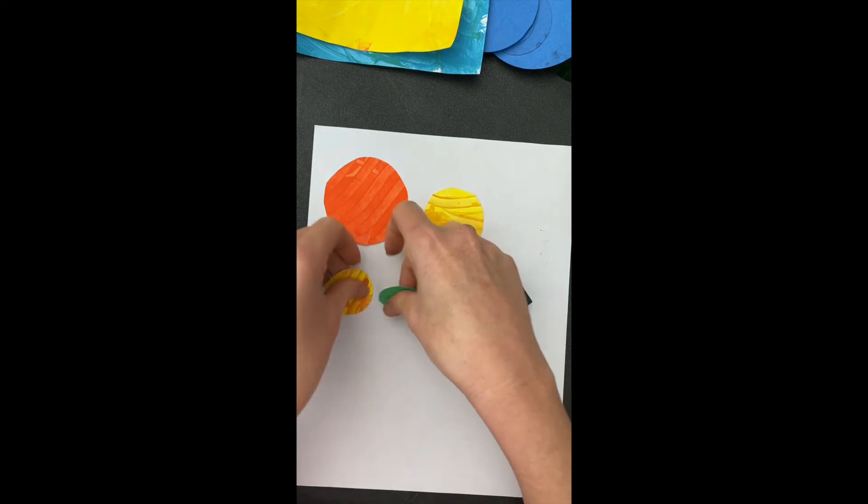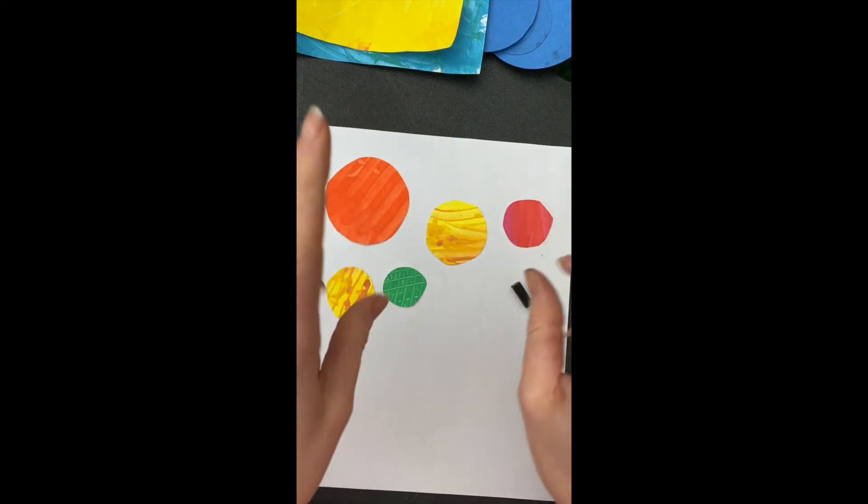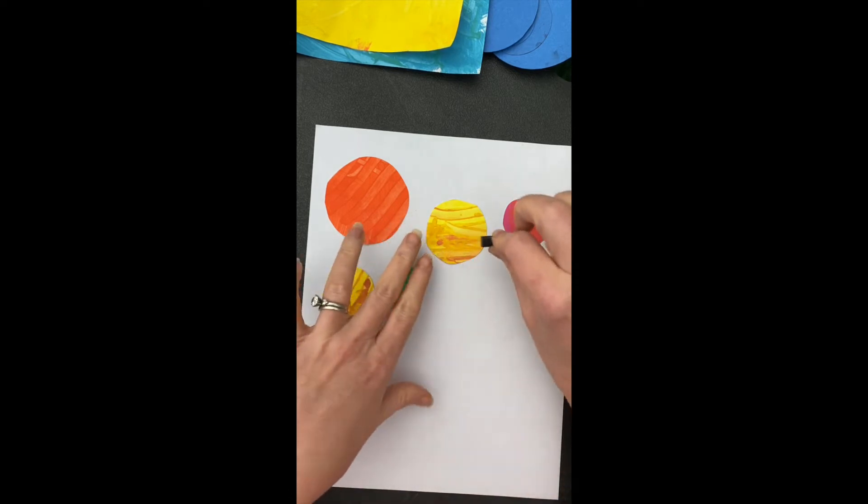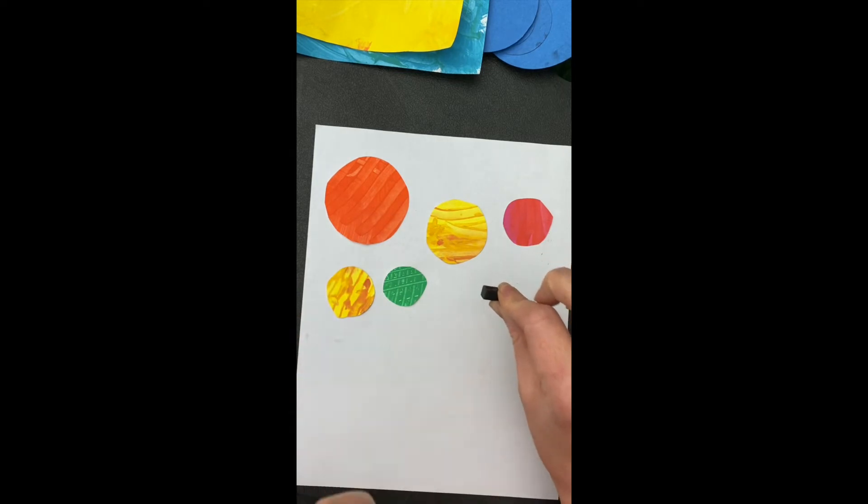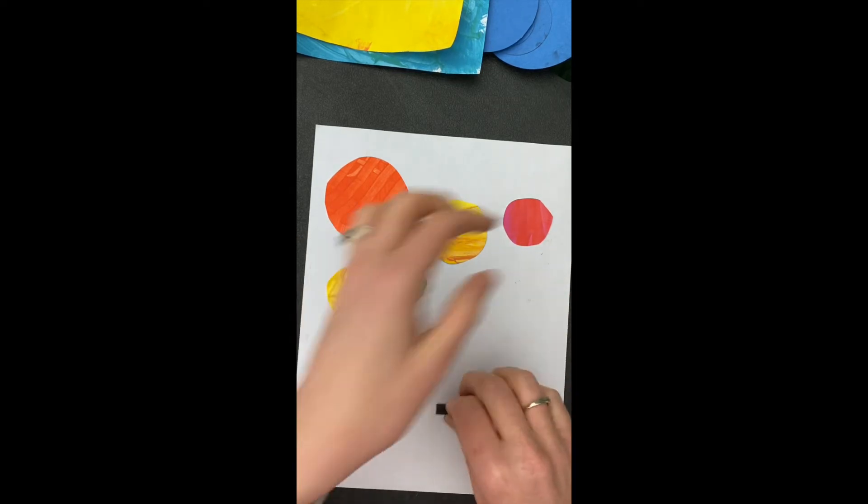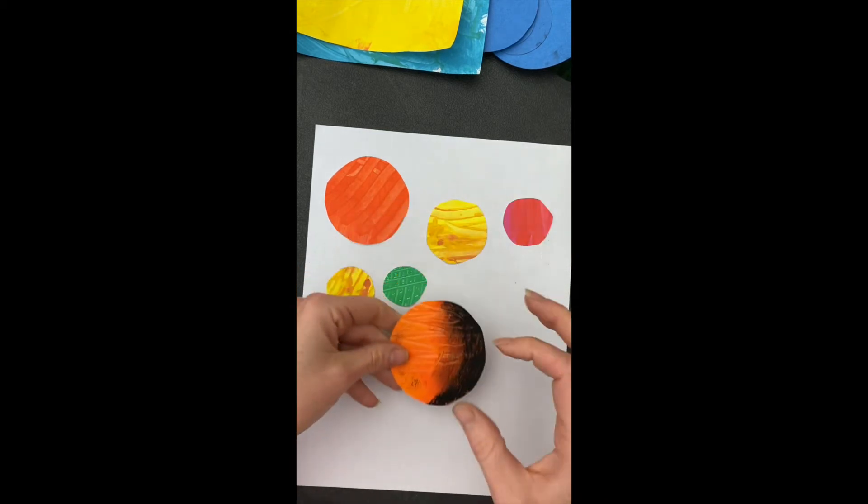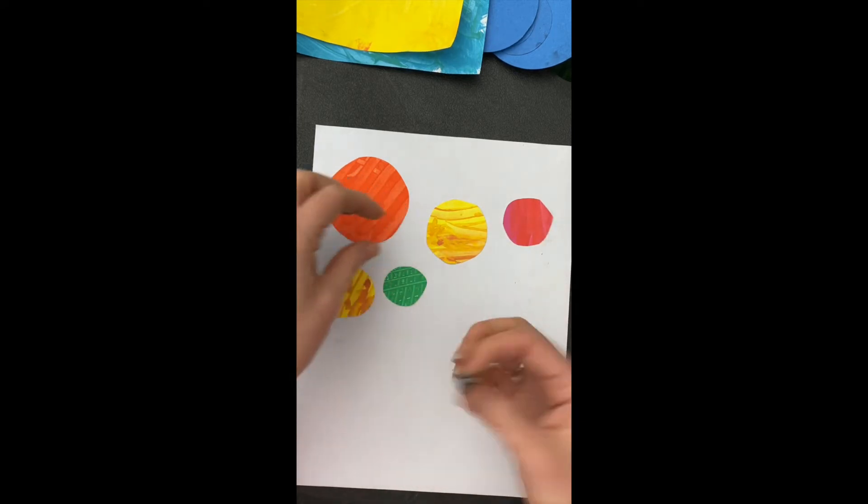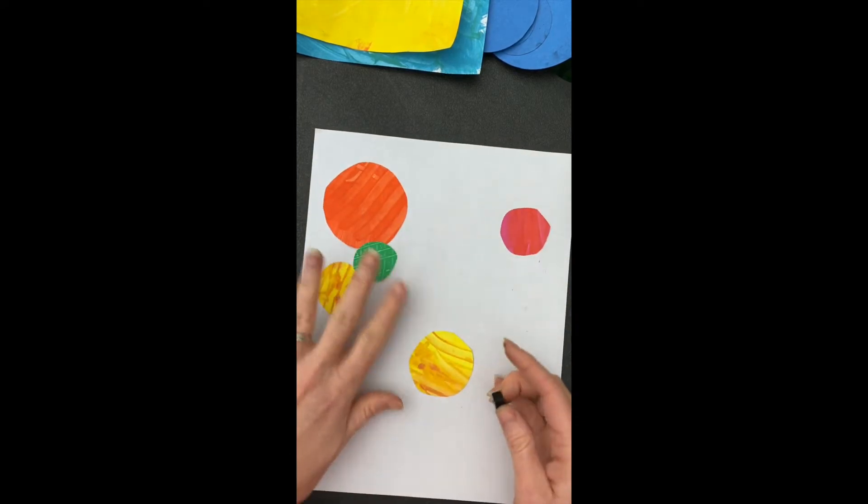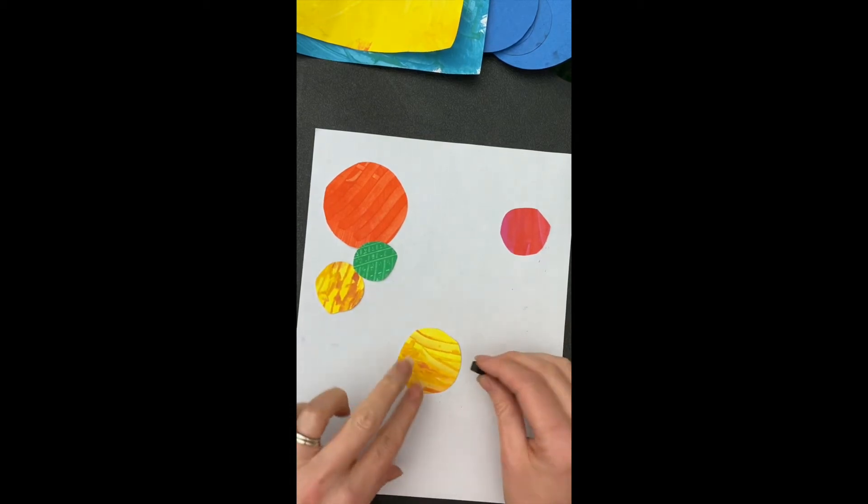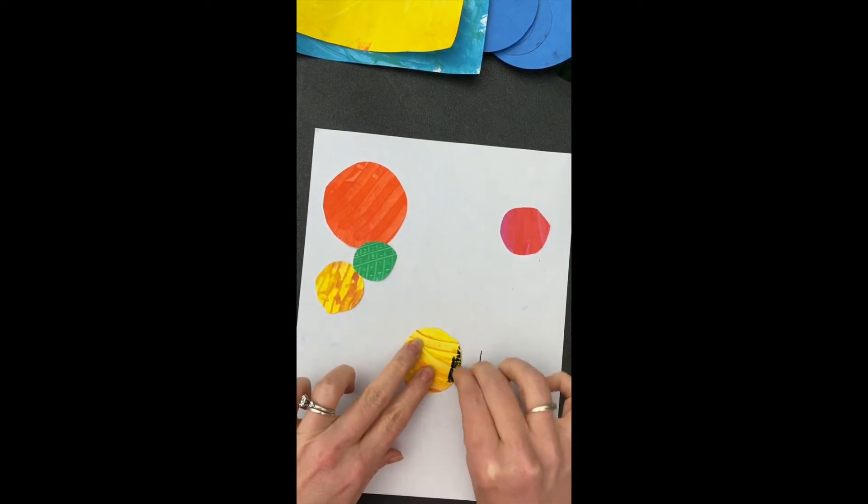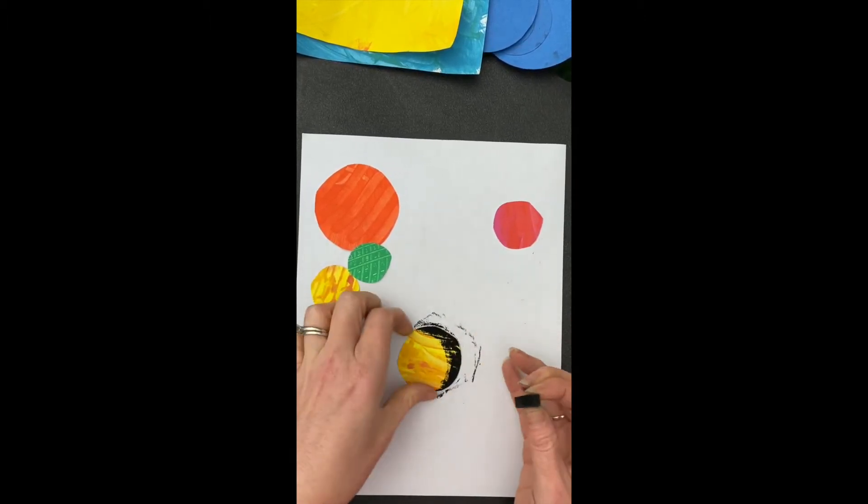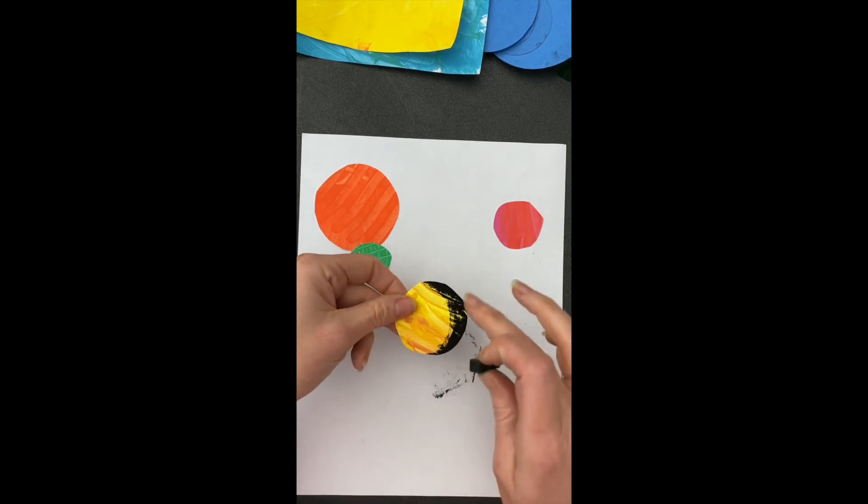So now we're going to turn these two-dimensional shapes into a three-dimensional form. And we're going to do that by using the side of our black chalk pastel. And we're going to be drawing like a backwards C on the edge of each planet. These are like the shadow. So when you are looking at something, what makes the illusion of it going back into space is the highlights and the shadows. I'm using the side of my chalk pastel, and I'm just going to color on the outside edges using that backwards C or like a crescent moon shape. I don't want to go too far towards the middle, just kind of like on the edge.